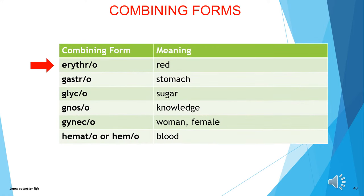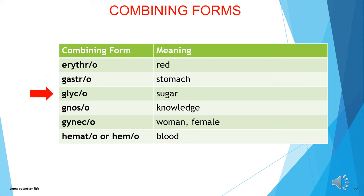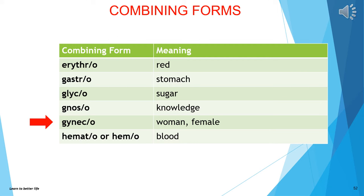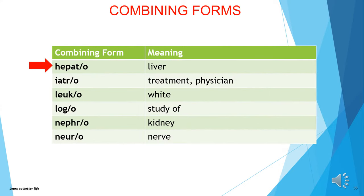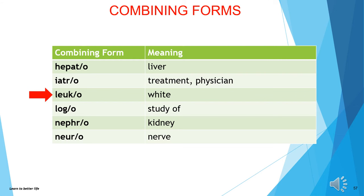Didn't I promise you that your head will spin? Let's do some more. Erythro- means red. Gastro- means stomach. Glyco- means sugar. Gnoso- means knowledge. Gyno/o- means woman or female. Hemato- or hemo- means blood. This is histology of the red blood cells, white blood cells, and thrombocytes, which are platelets. Hepato- means liver. Iatro- means treatment or physician. Leuco- means white, such as leukocytes in the image we just saw.